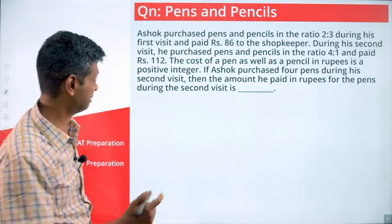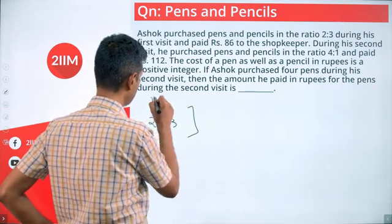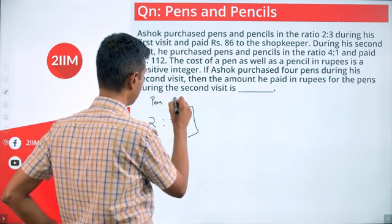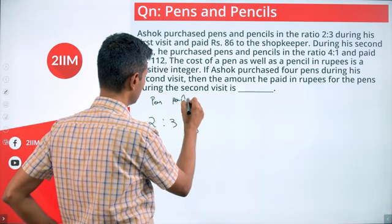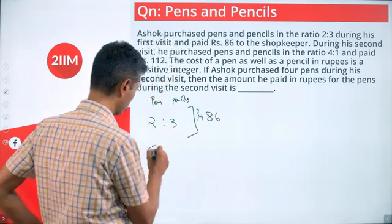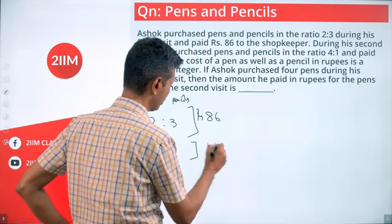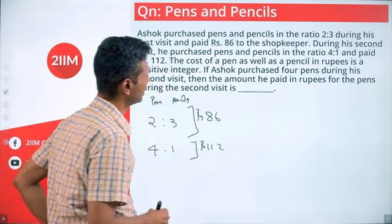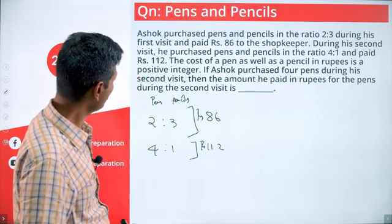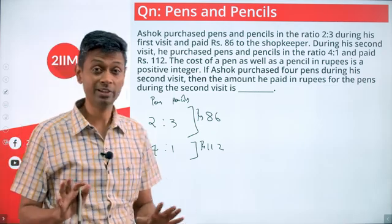The ratio is given as 2:3 for pens and pencils, he paid 86 rupees. Next time it's 4:1 ratio and he pays 112 rupees. The cost of a pen as well as a pencil in rupees is a positive integer - we're dealing with integers.